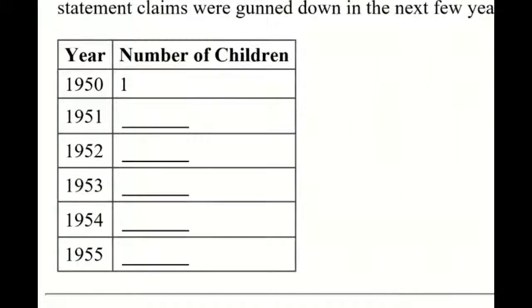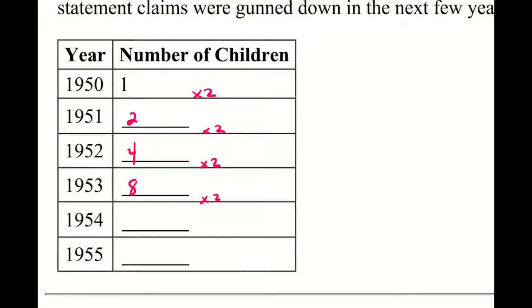So if I'm going to multiply each year by two, if I start with the number one, one times two is two. Then I start with the number two, two times two is four. So forth, four times two is eight. I'm going to end up with 32 in 1955.